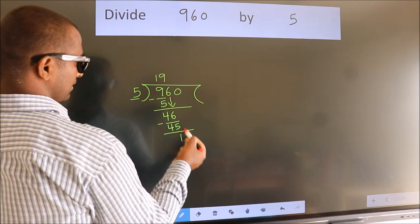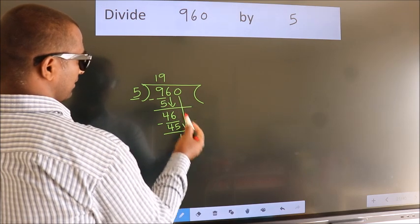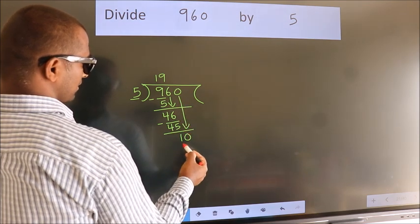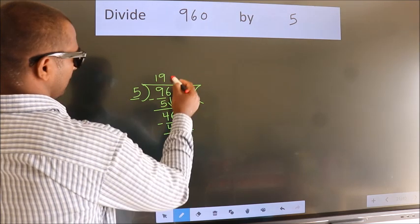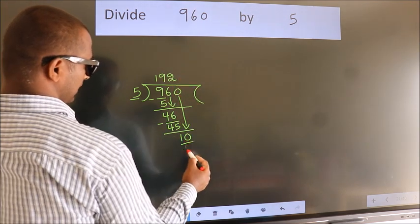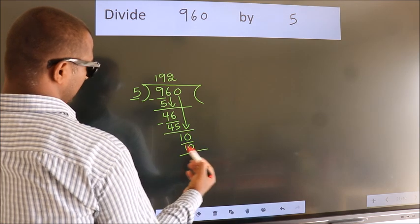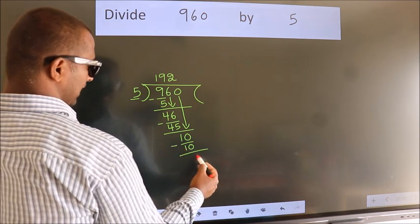After this, bring down the beside number. So 0 down. So 10. When do we get 10 in the 5 table? 5 twos is 10. Now we subtract. We get 0.